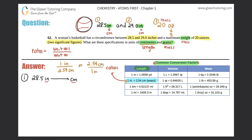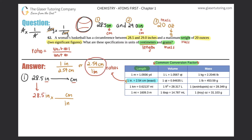I start with what I'm given: 28.5 inches. From algebra, if you don't want a unit, put it on the opposite side of the fraction — the same unit on top and bottom cancels out, just like numbers or variables. So if I don't want inches anymore, I multiply by a ratio with inches on the bottom and centimeters on top. That gives me 2.54 centimeters over one inch, and the inches cancel.